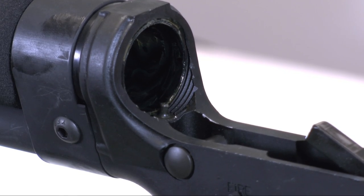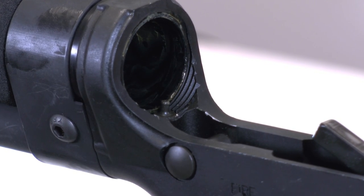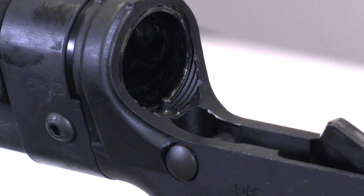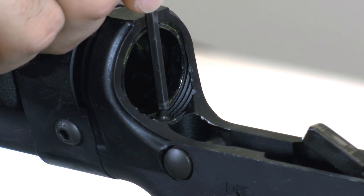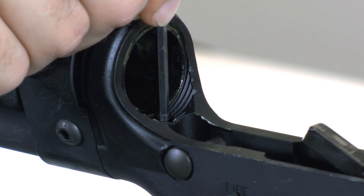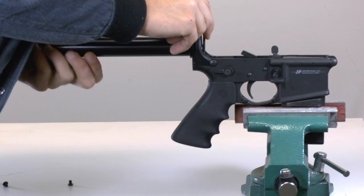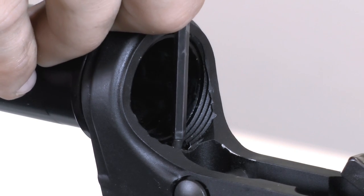Next, we recommend removing the buffer retainer and plunger before proceeding. The SCS doesn't require these parts, and the installation is made easier without them getting in the way. To remove the plunger and spring, you'll need to partially remove the buttstock and buffer tube to gain access.